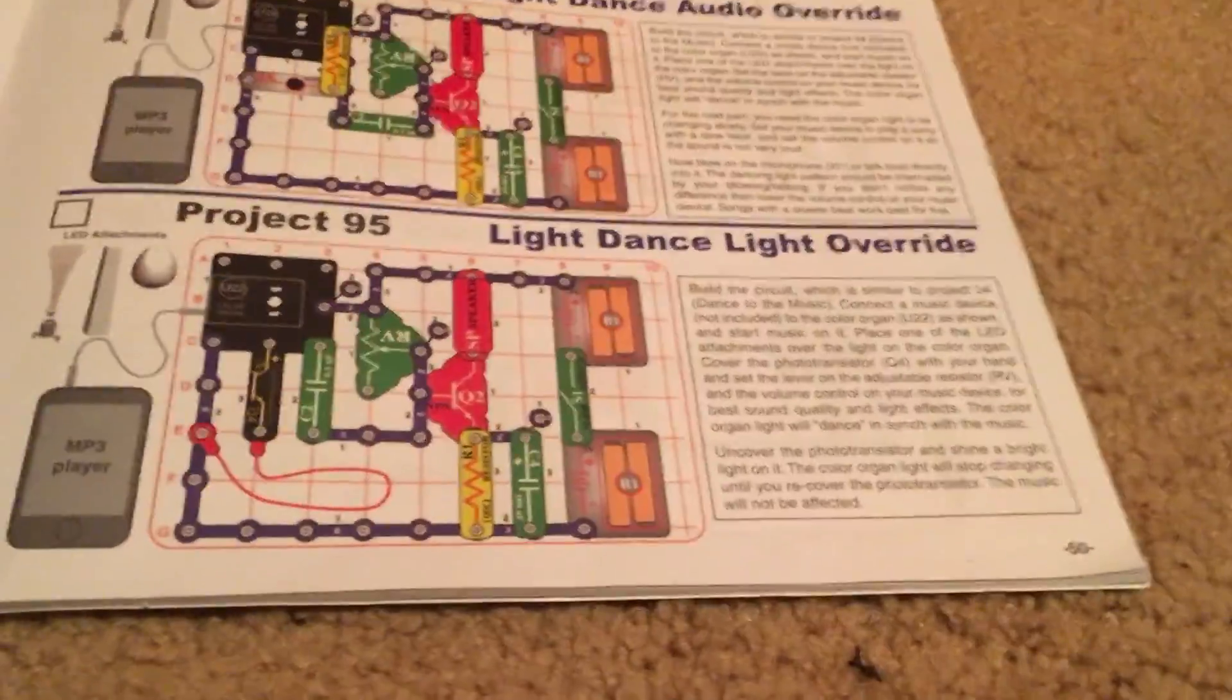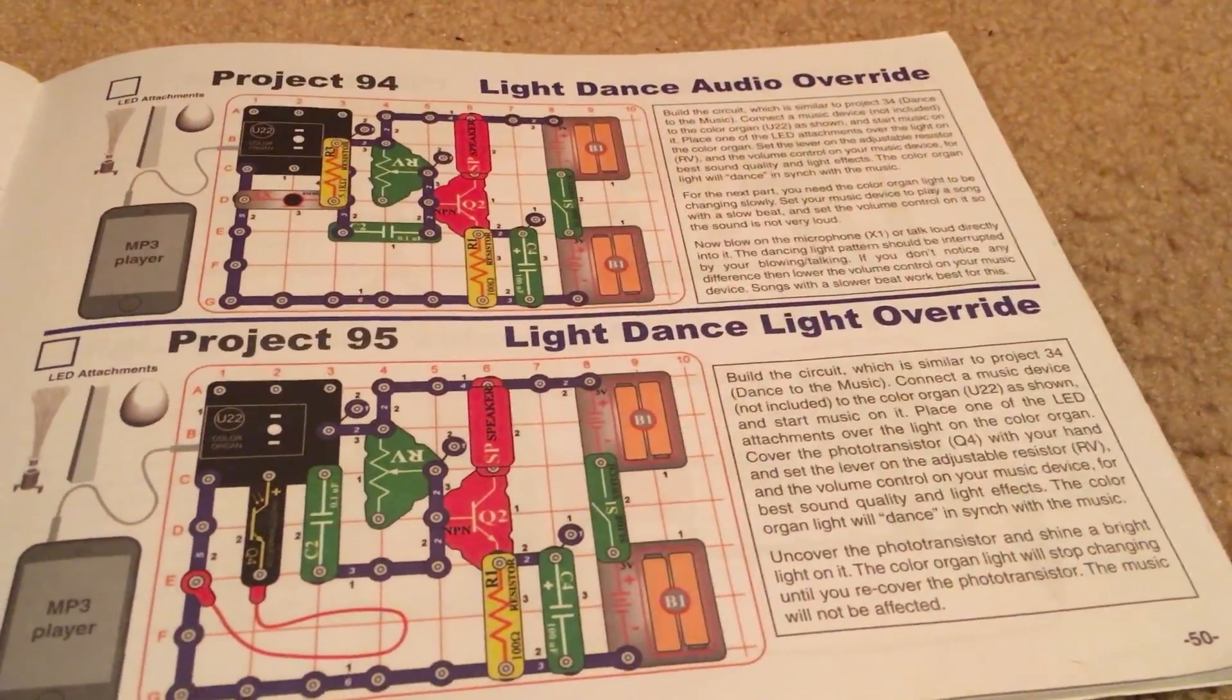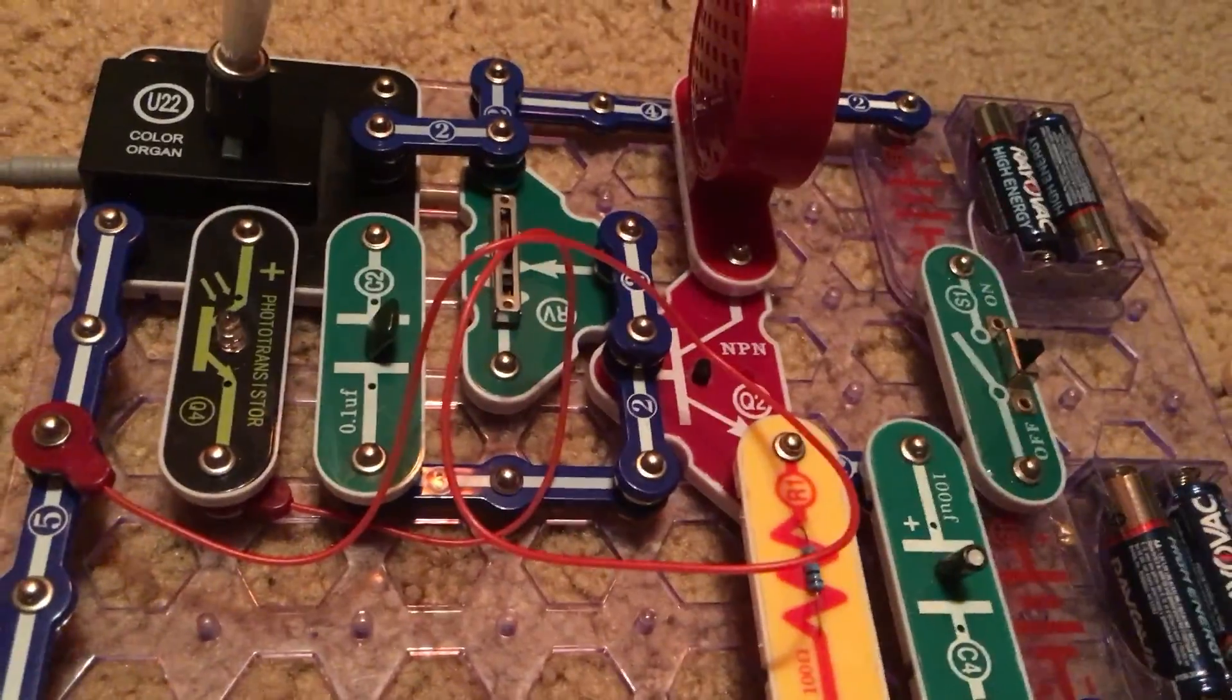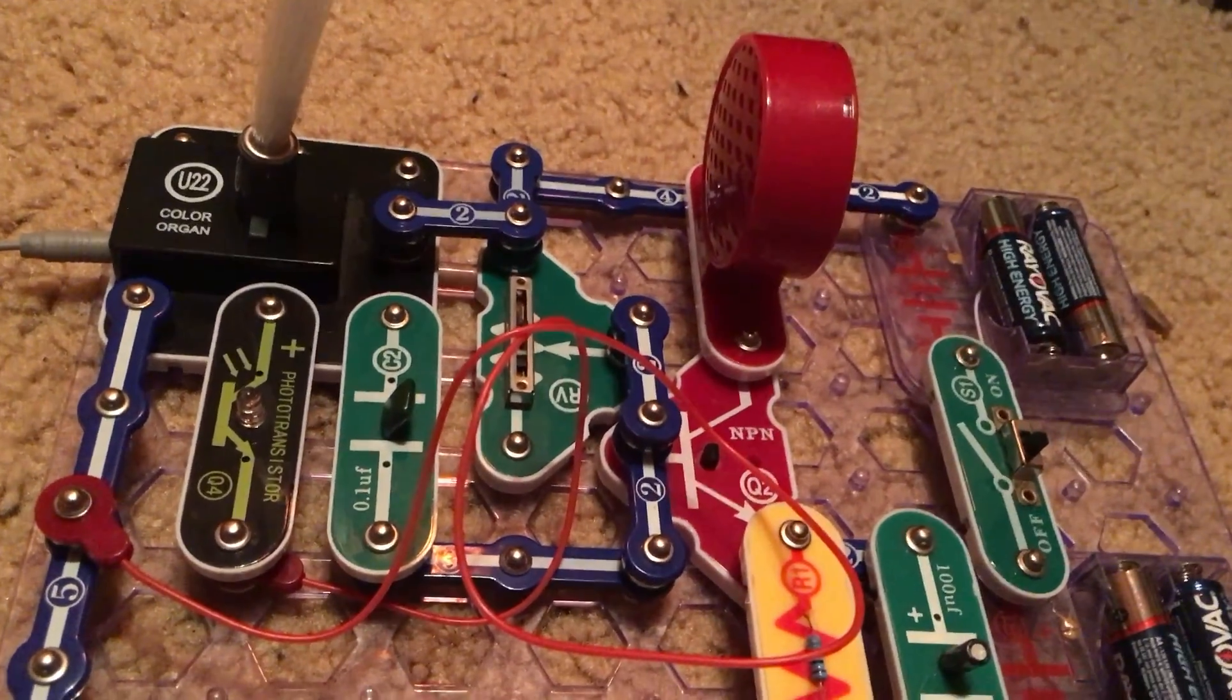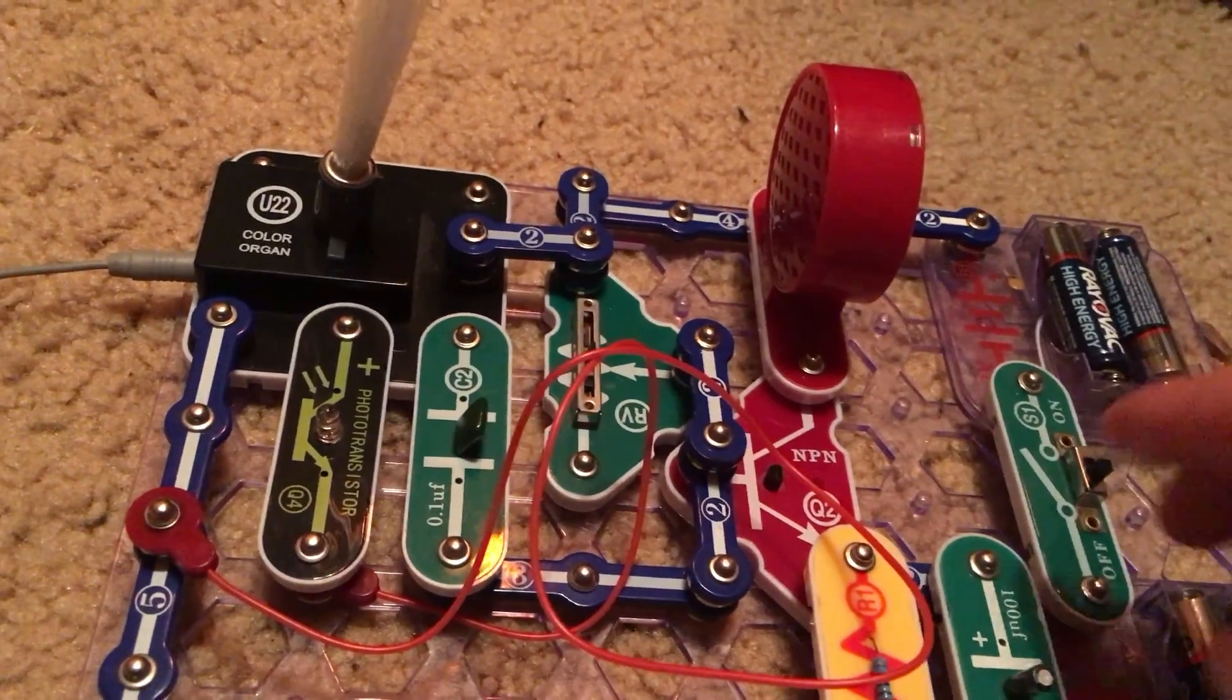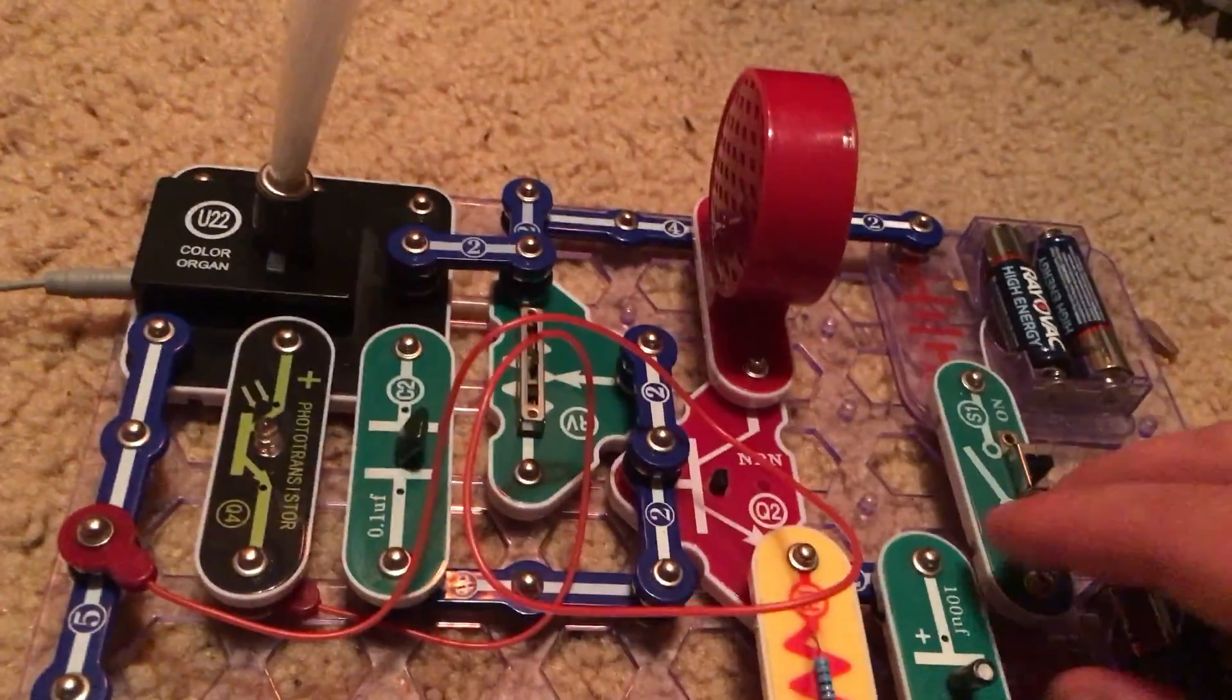Project 95 is Light Dance Light Override. This project is similar to Project 94, except we are going to use the phototransistor instead of the microphone. And unlike the previous project, which if you saw it, I was not actually able to get it to work even though I demonstrated it, I'll be able to get this project to work. And we are going to use the phototransistor, and this circuit will be based on light instead of sound.